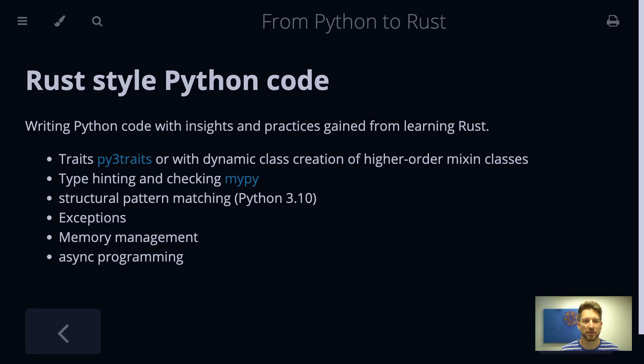Hello, welcome to Bedroom Builds at the From Python to Rust series, episode 40: Rust-style Python code, coming from the previous episode where we spoke about fulltick.